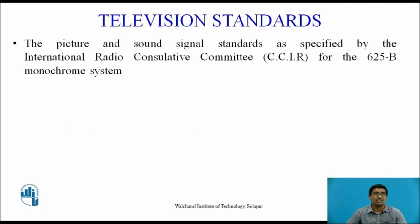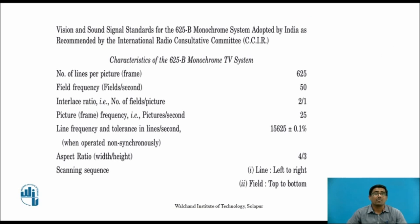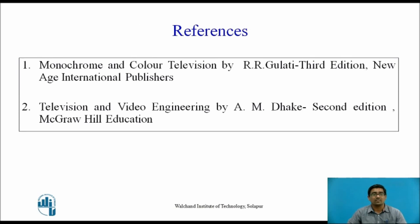Television standards: the picture and sound signal standards as specified by the International Radio Consultative Committee (CCIR) for the 625B monochrome system are shown in this table. Number of lines per picture frame: 625. Field frequency: 50. Interlace ratio: 2:1. Picture frame frequency: 25. Line frequency: 15,625 Hz. Aspect ratio: 4:3. Scanning sequence: left to right, top to bottom. Thank you.